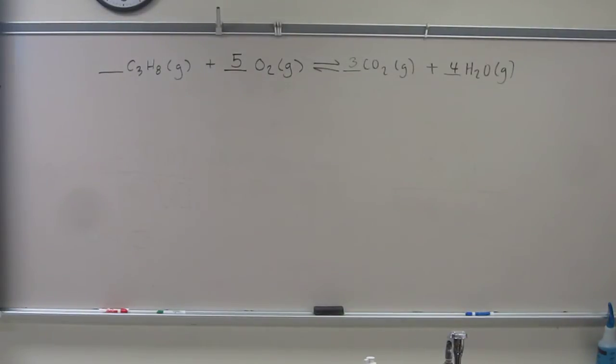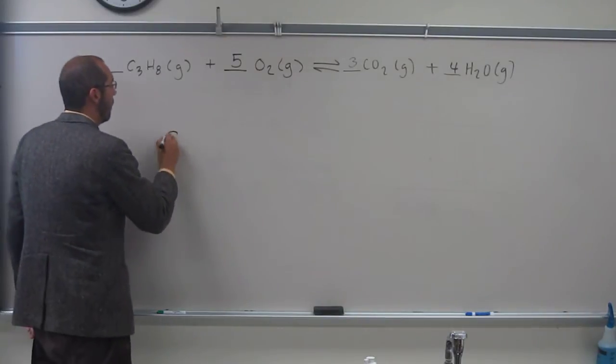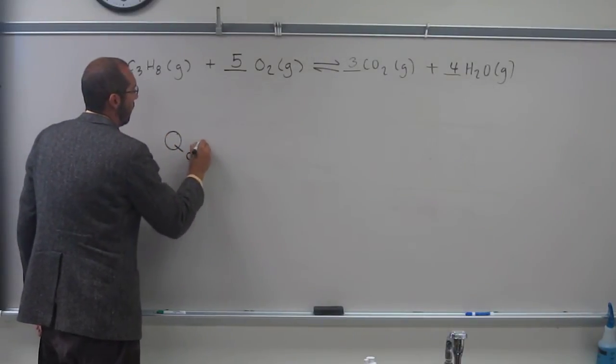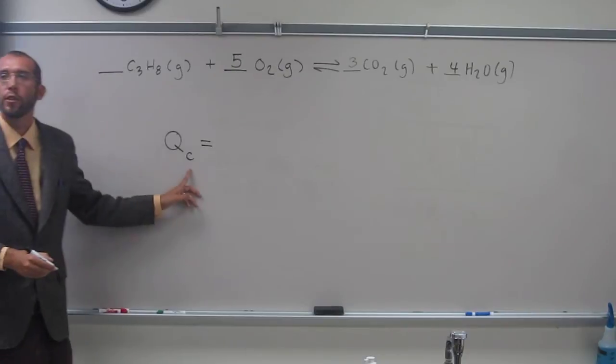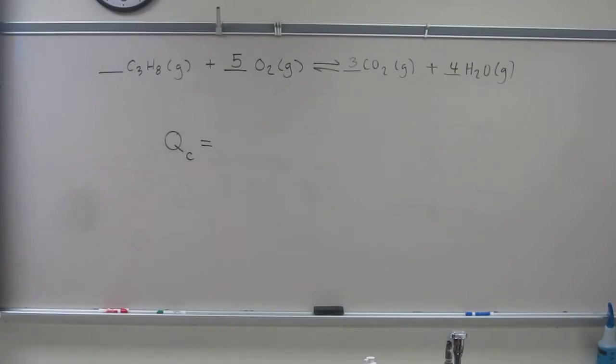So now, since we have the balanced chemical equation, we can write out the reaction quotient. Okay? This C refers to concentration. Because we're doing it in concentration.